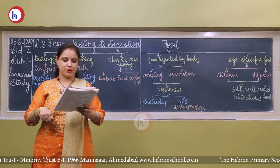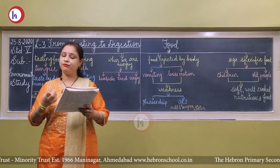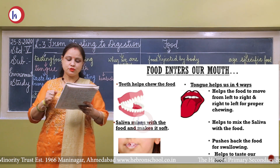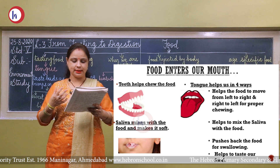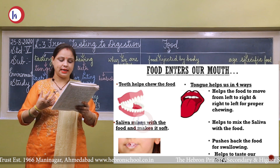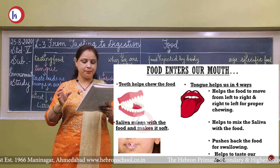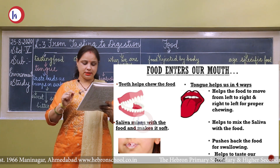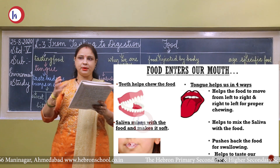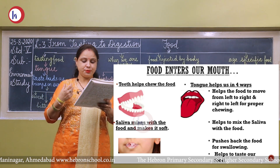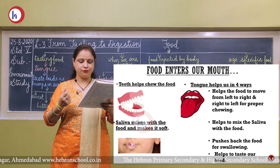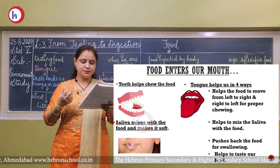What happens to food after it enters our mouth? First, we chew the food. Our teeth help us chew it into a fine paste so we can swallow it easily. Meanwhile, saliva mixes with the food and makes it soft. Our tongue helps us in four ways: first, it moves food left to right for proper chewing; second, it mixes saliva with the food; third, it pushes food back for swallowing; and fourth, it helps us taste our food.